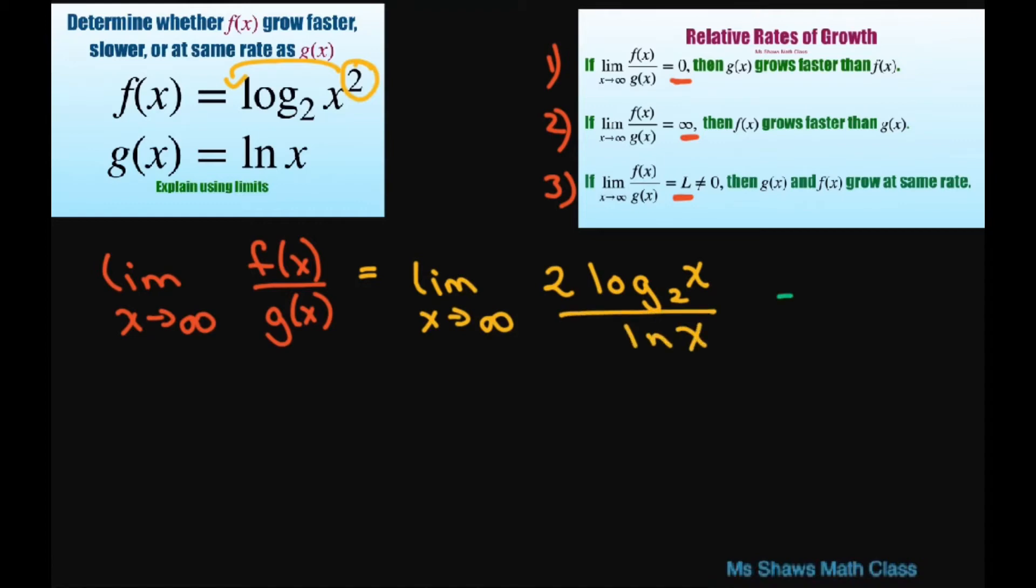The next thing I want to do is do a change of base here and write this in terms of natural log. So this is going to equal the limit as x approaches infinity of 2 times, and the change of base formula is just ln of x divided by ln of 2, and then we're dividing by ln of x.